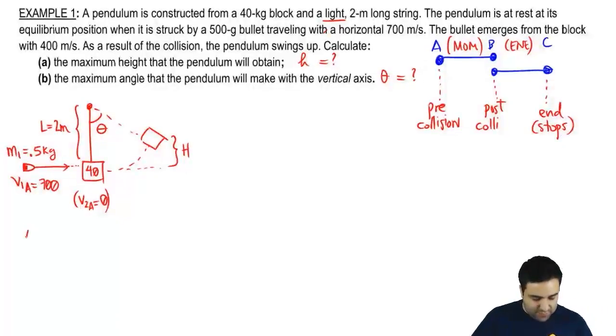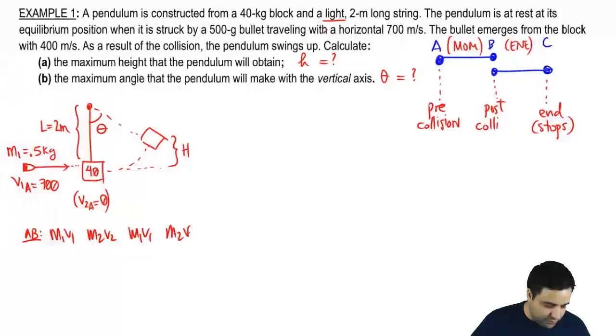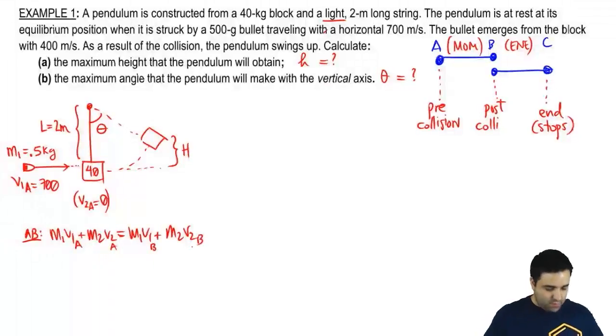Okay. So I'm going to write an equation from A to B. I'm going to write the momentum equation. M1V1, M2V2, M1V1, M2V2. This is from A to B. Okay. So that's the momentum equation.